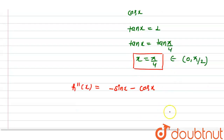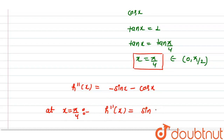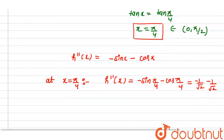Now we take the point at x equal to pi by 4. If we check, h double dash x at pi by 4 equals minus sin pi by 4 minus cos pi by 4, which is minus 1 by root 2 minus 1 by root 2, giving minus 2 by root 2, which is minus root 2. This is less than 0.